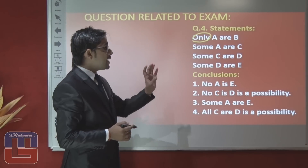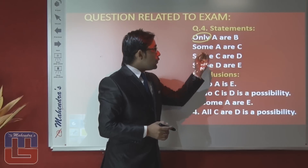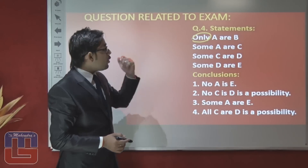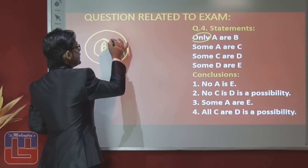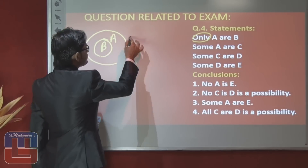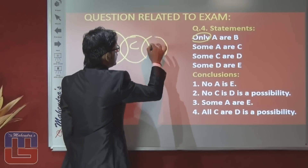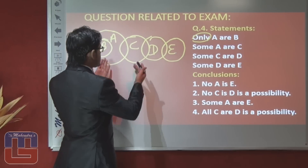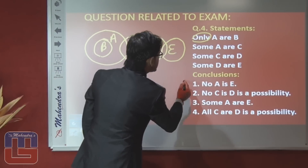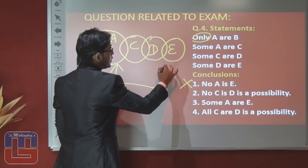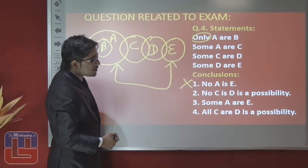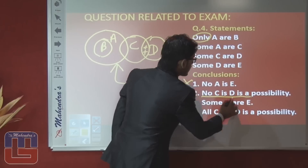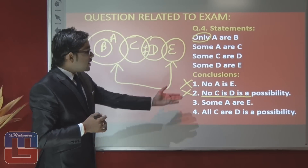Question 4: 'Only A are B' means 'all B are A.' If you find 'only pen are pencil,' conclude 'all pencil are pen.' Statements: only A are B (= all B are A), some A are C, some C are D, some D are E. Conclusion 1: 'No A is E' — the statement is positive, conclusion is negative in definite manner, so false. Conclusion 2: 'No C is D is a possibility' — there is already some positive relation between C and D, so it cannot be possible that all C are not D — false.